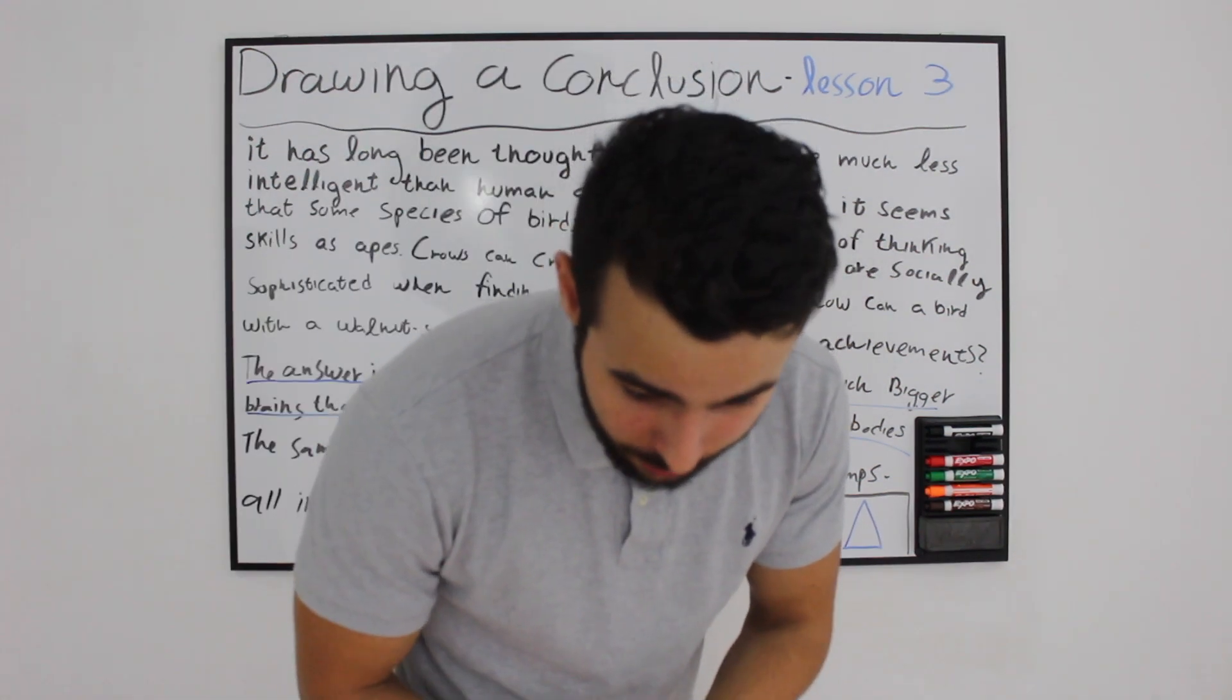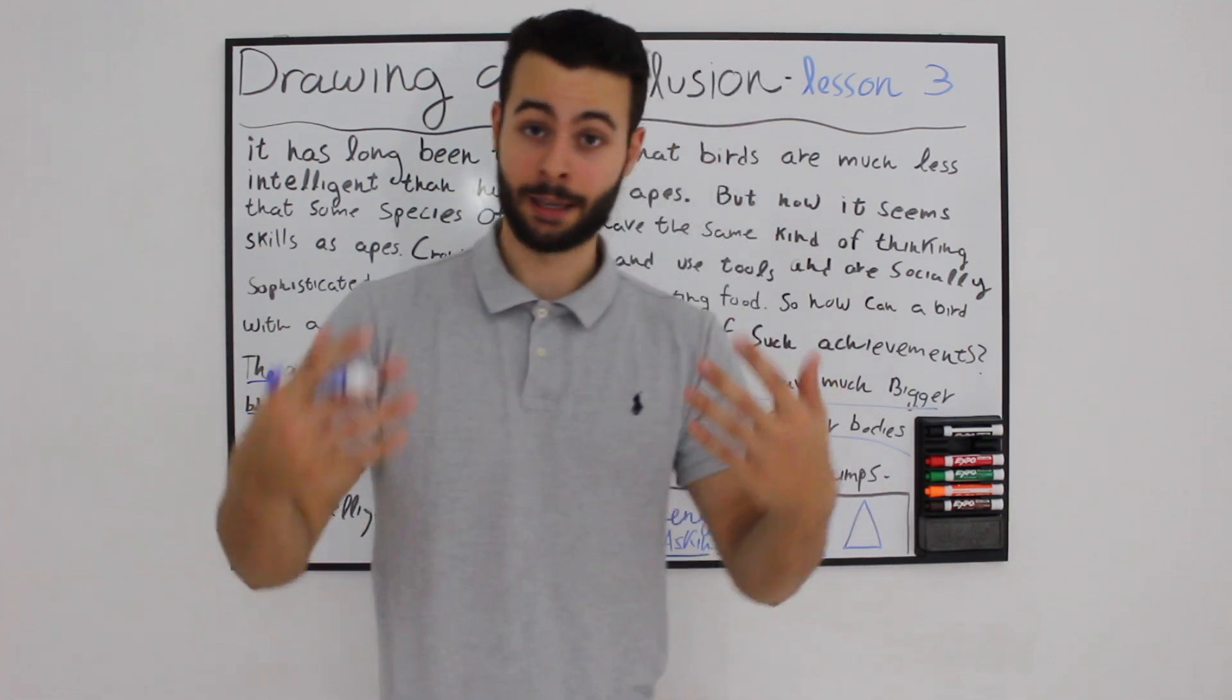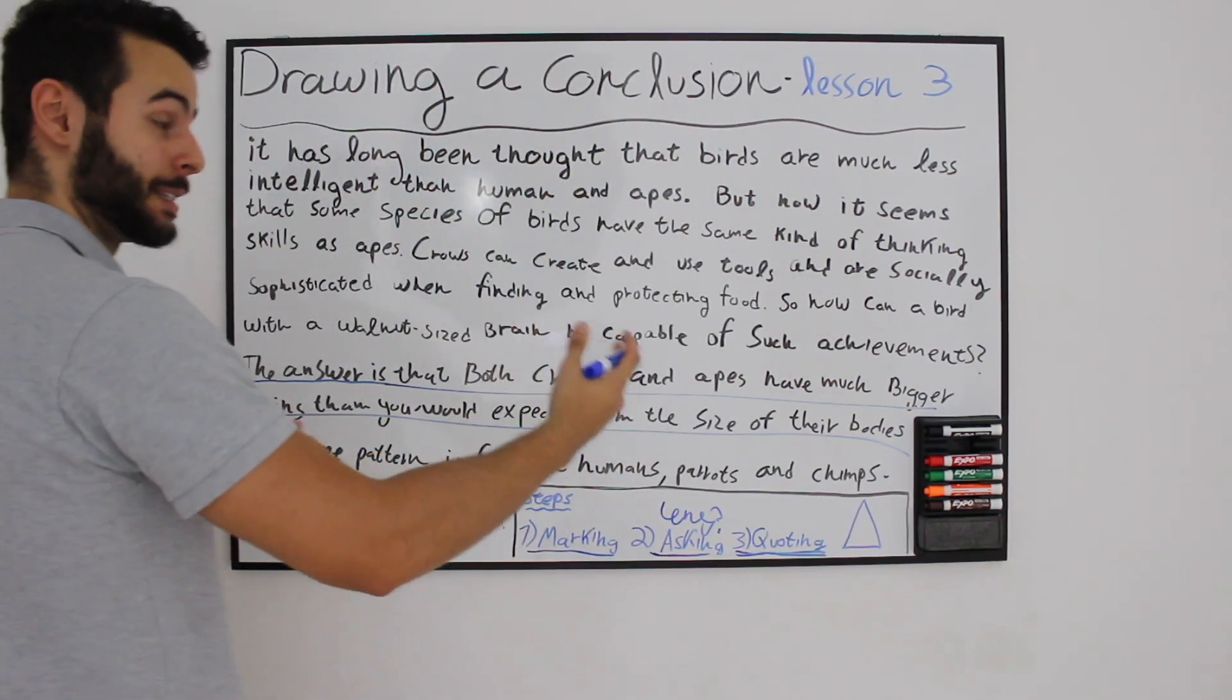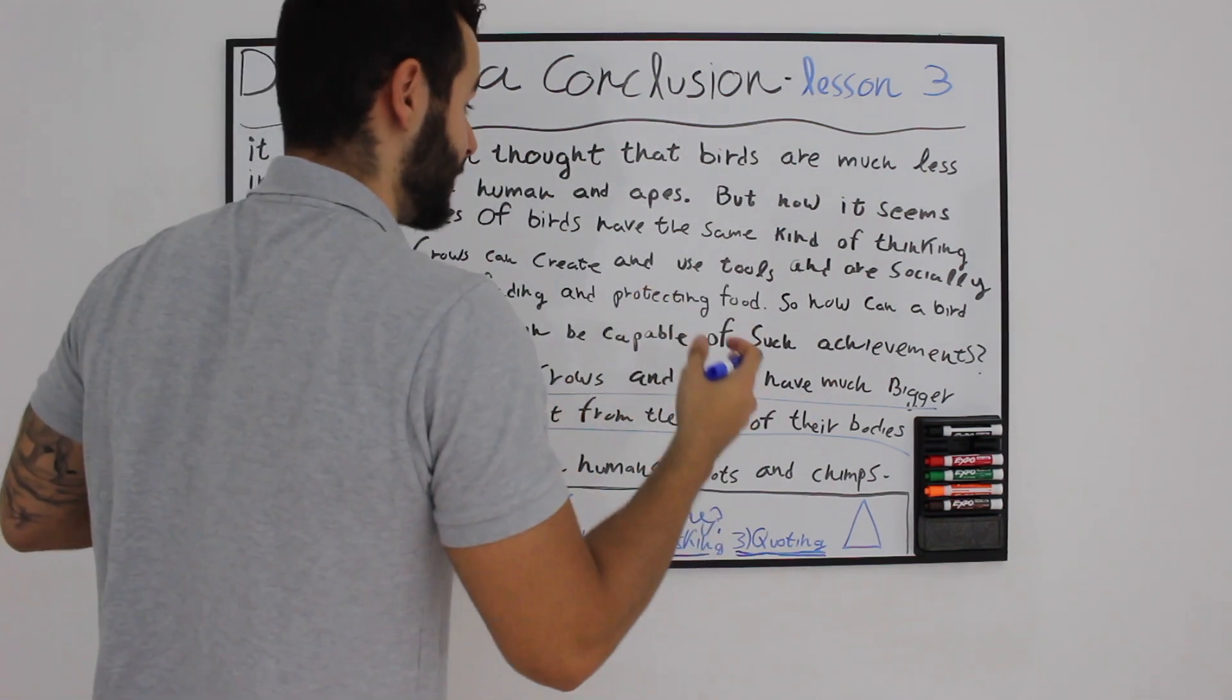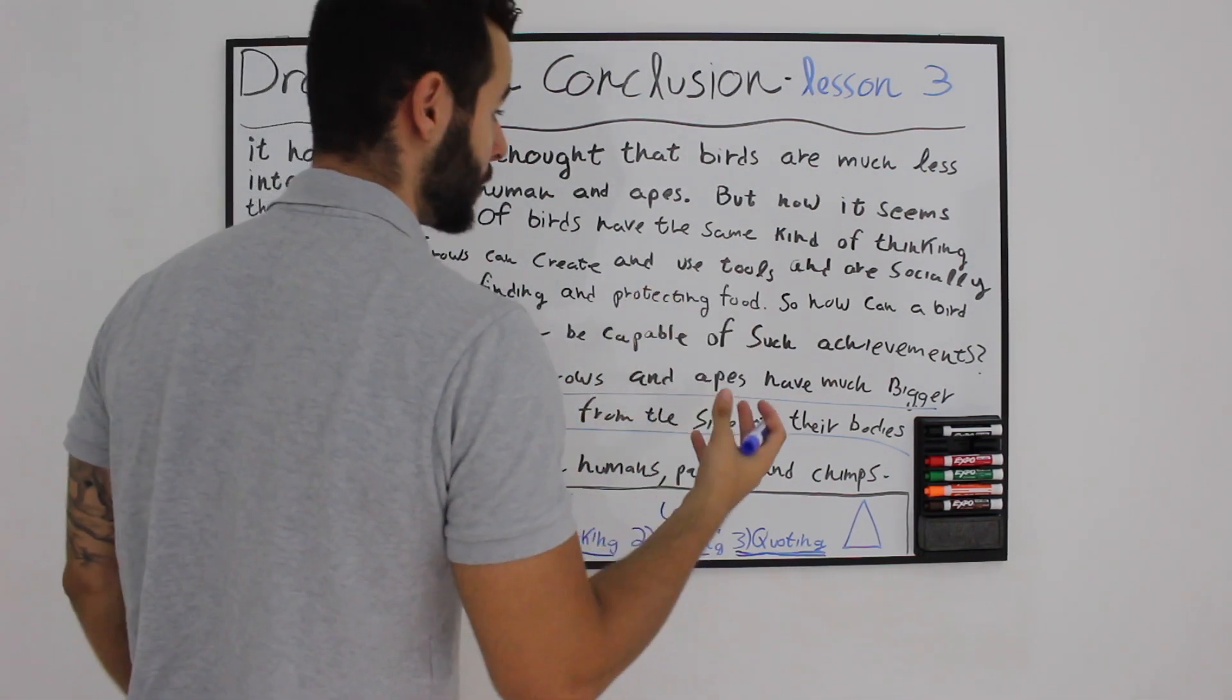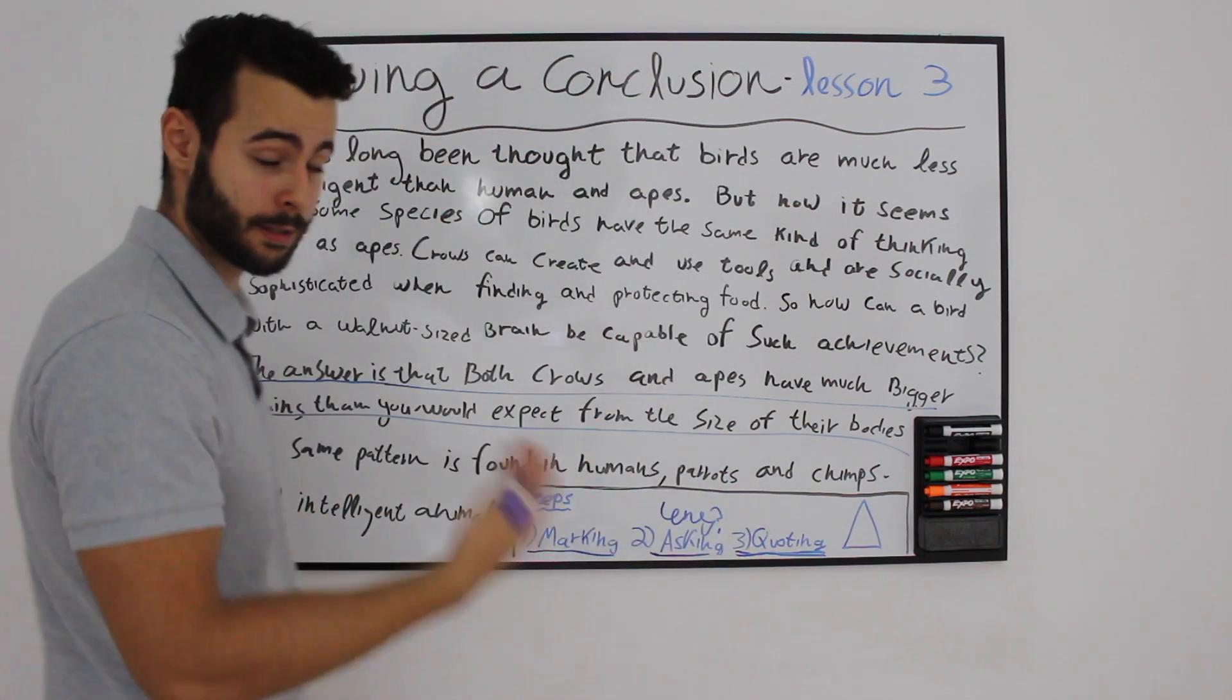Animals that cannot create tools are not intelligent. Again, can we quote anything inside this text that says that animals that can create tools are not intelligent? We can't. Let's keep going.